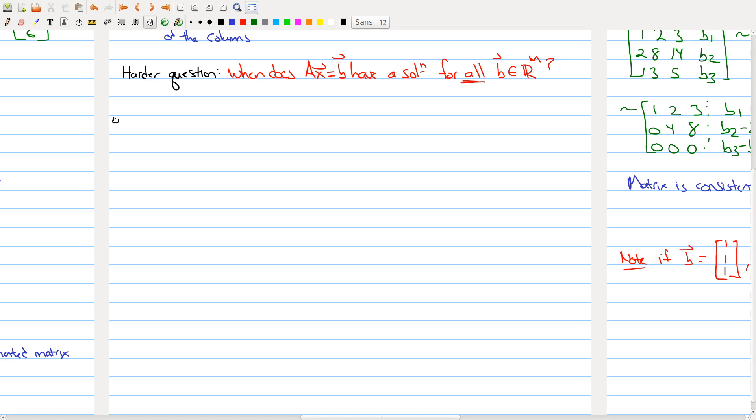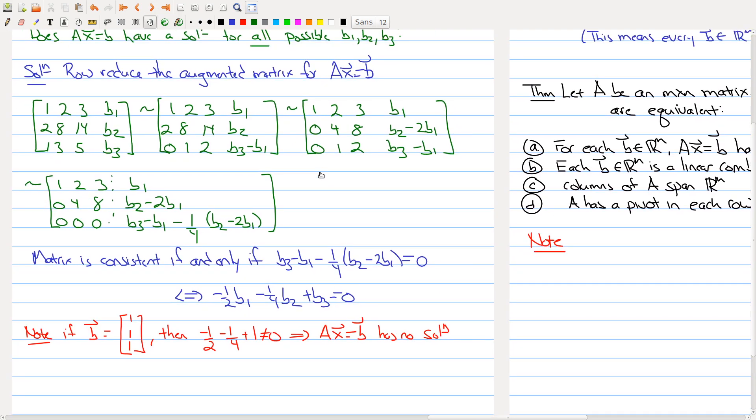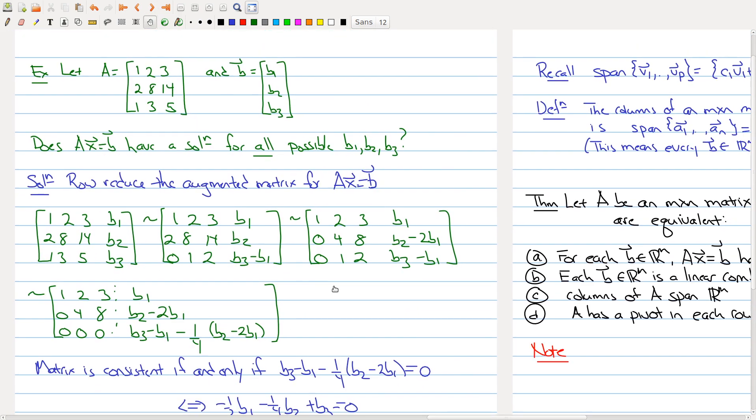Welcome back to the third part of today's lecture. Today we're looking at this somewhat harder question of when does Ax equal b have a solution for all vectors b in R^m. We've seen in this example that this may not be possible for every particular matrix.